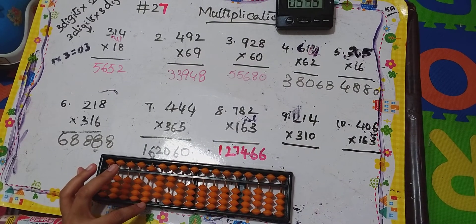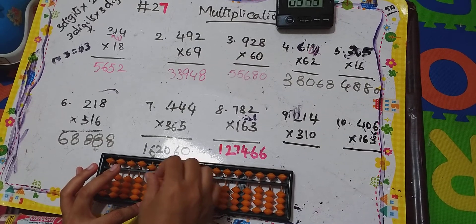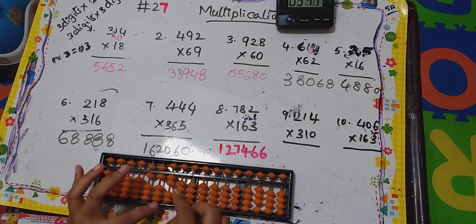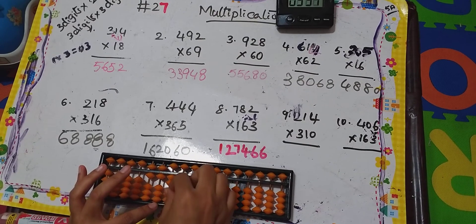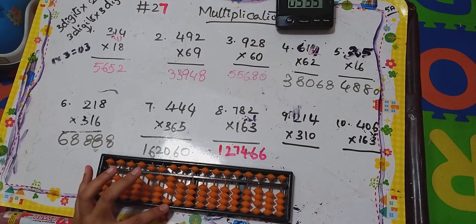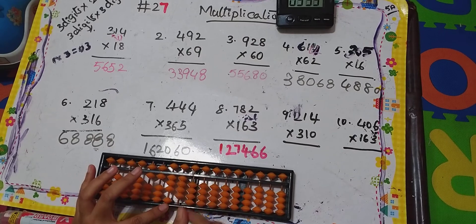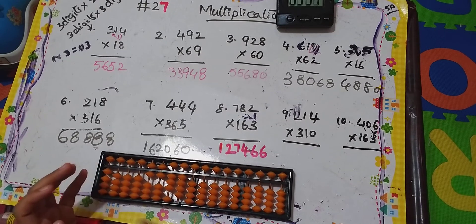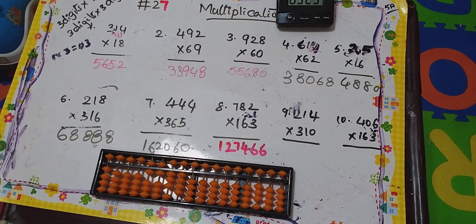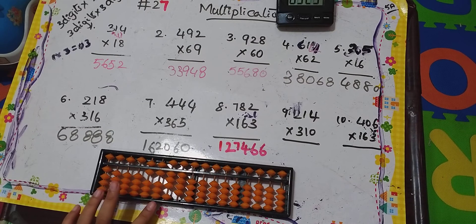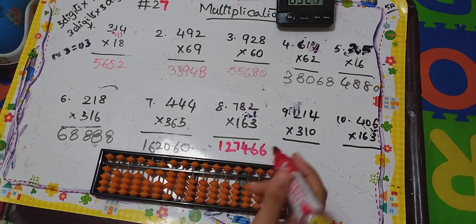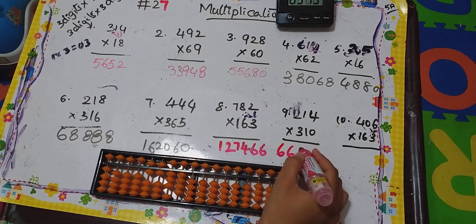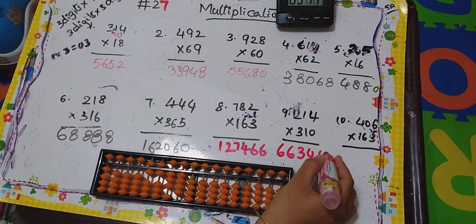For 1, we have to leave this column and start from here: 1 times 2 is 02, done. Then 1 times 1 is 01, done. Then 1 times 4 is 04, done. The next digit is 0, so we don't need to do anything. Our answer is 6, 6, 3, 4, 0 — sixty-six thousand, three hundred and forty.